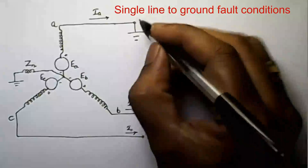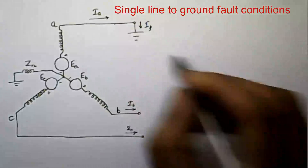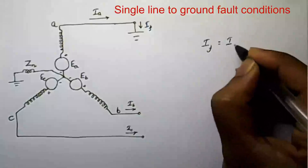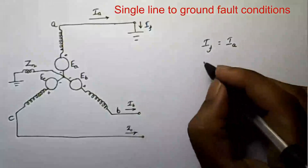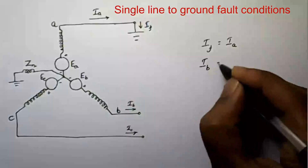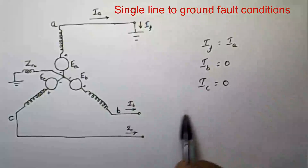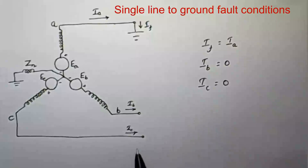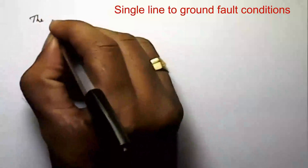Phase A line touches ground, so fault current will flow through this line. The fault current IF is equal to Ia. The remaining two phases are open-circuited, so IB is equal to zero and IC is equal to zero, because in an open circuit there is no current flowing. When the circuit is closed, a current will flow.